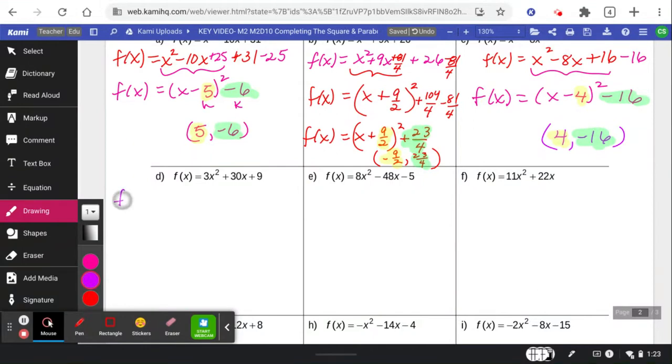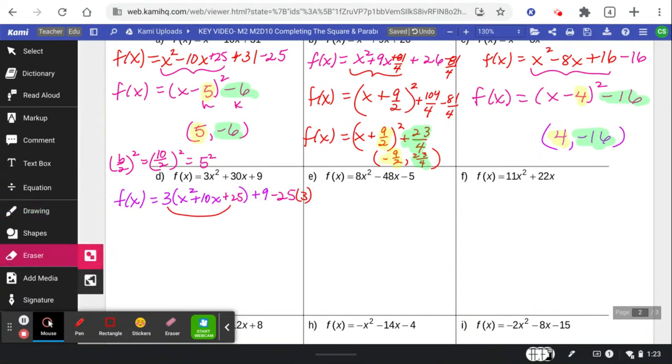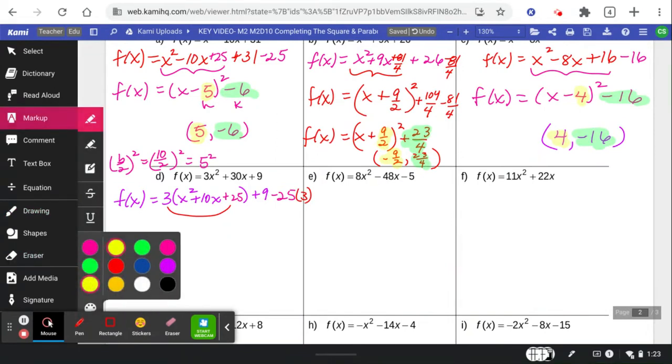All right. The next one does have a coefficient in front. It has a 3. So we need to divide that 3 out and make space. When we go off to the side to do our b work, we're taking the 10 and splitting it in half. So we're adding 25 and subtracting 25. But we're not just subtracting 25 one time. We're subtracting 25 three times. This number 3 right here means we need to multiply by 3 right there.